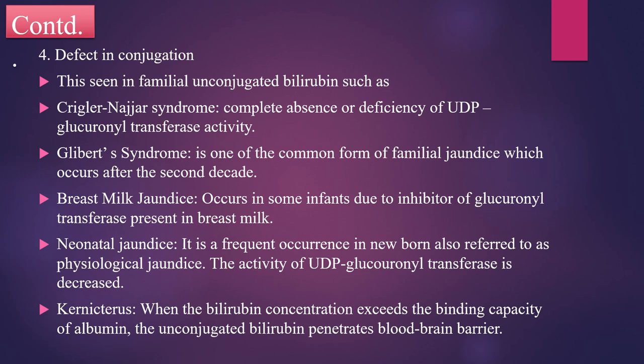The next type is Gilbert syndrome, which is one of the common forms of familial jaundice occurring after the second decade. Next is breast milk jaundice, which is also one of the causes of defective conjugation. It occurs in some infants due to inhibition of glucuronyl transferase present in the breast milk.